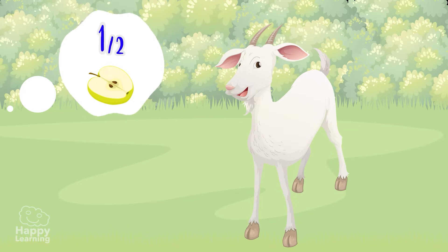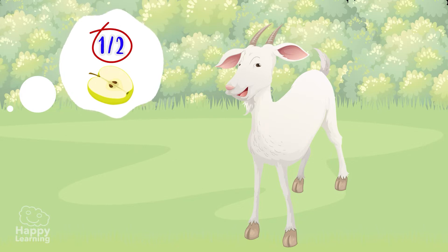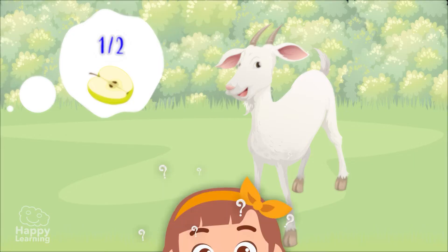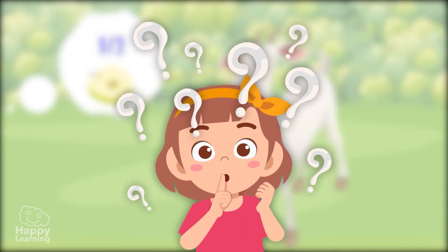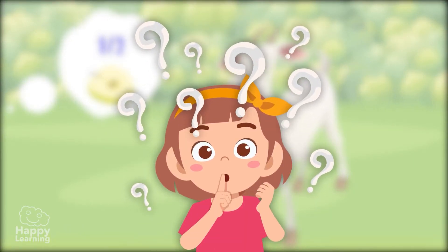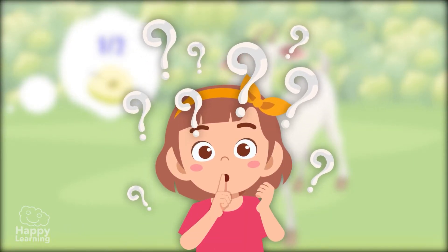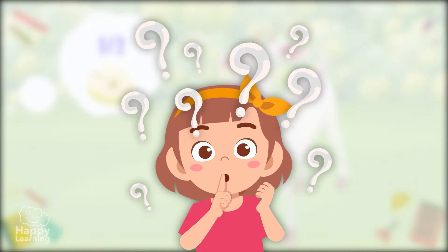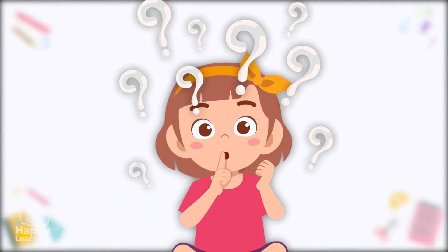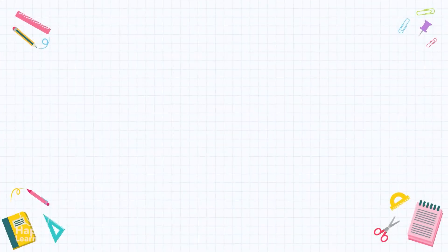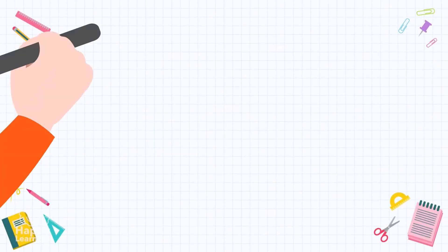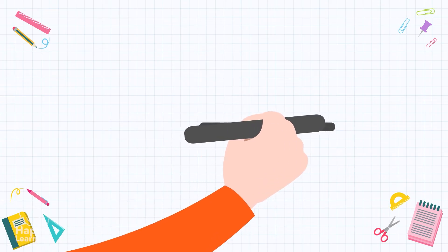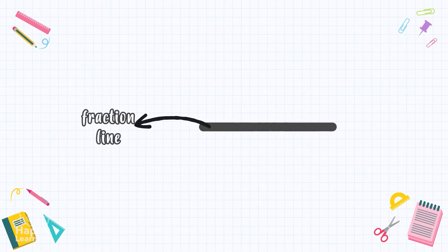I gave her half of the apple — a half. That's a fraction! But how do we express this in the language of mathematics? It's very easy. We express it like this: we draw a line, the fraction line.